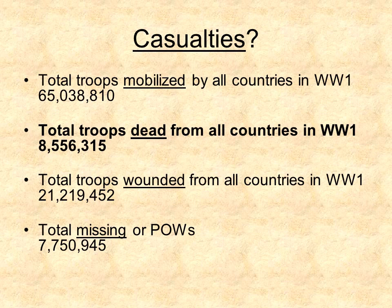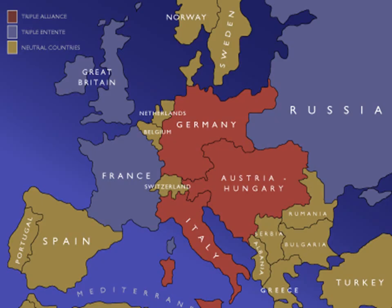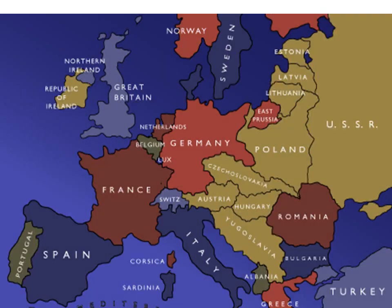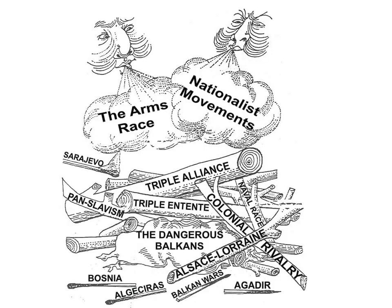There were 6 crore casualties in World War I, with total troops of over 85 lakhs dead and 7.7 million missing or prisoners of war. This was the whole video — thanks, and subscribe for more updates.